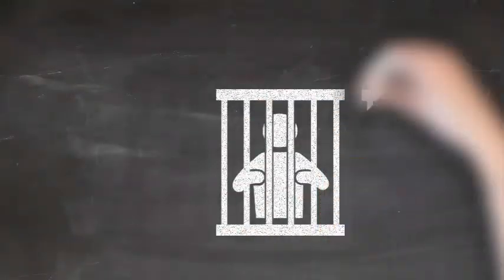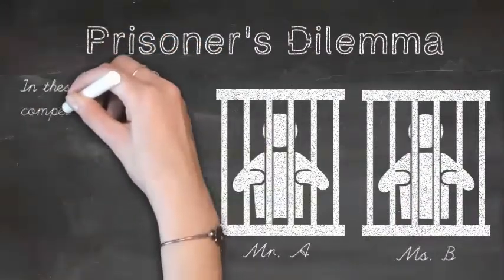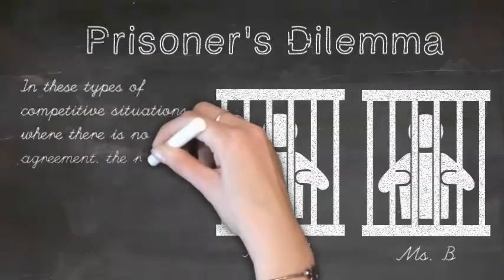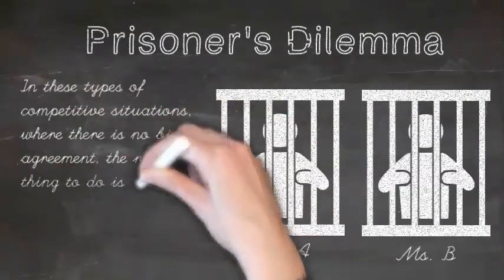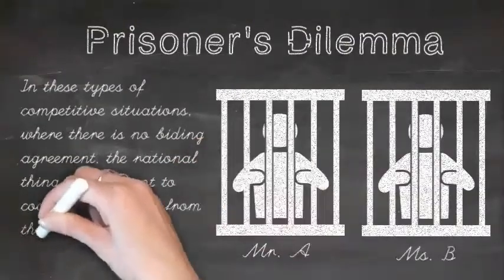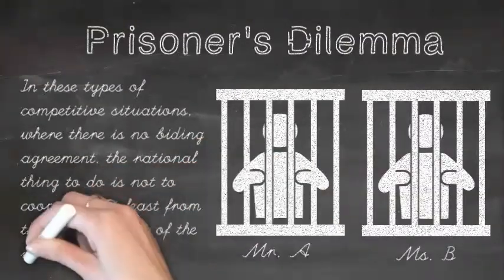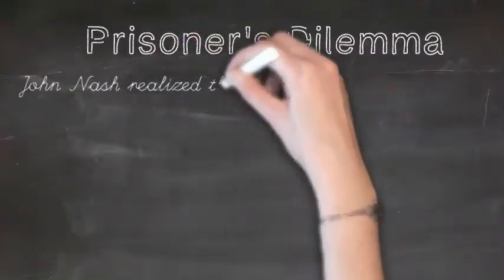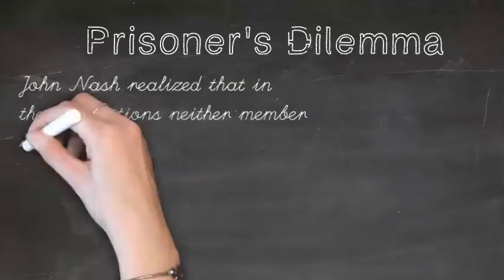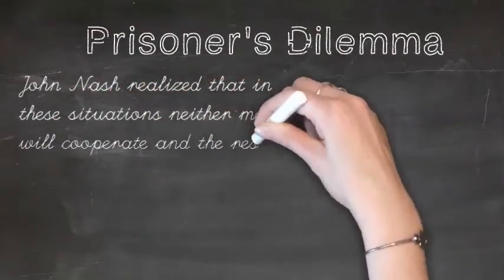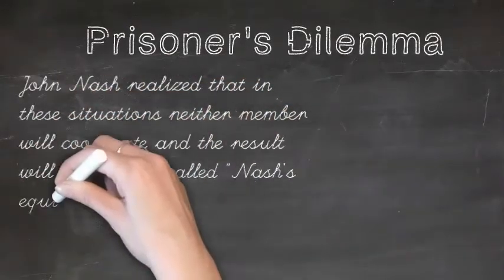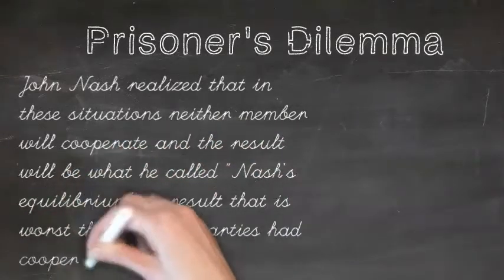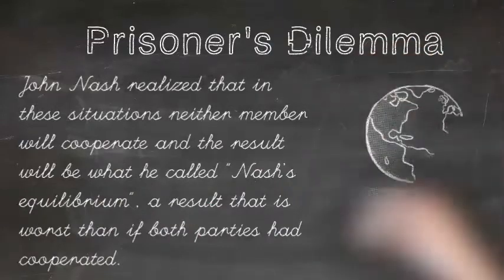In these types of competitive situations, when there is no binding agreement, the rational thing to do is to not cooperate, at least from the point of view of the individual. John Nash realized that in these situations, neither member will cooperate and the result will be what he called Nash's equilibrium — a result that is worse than if both parties had cooperated.